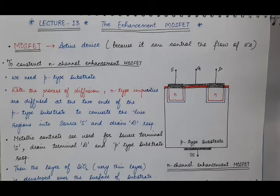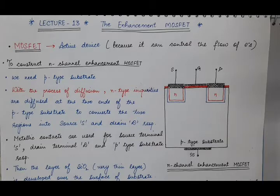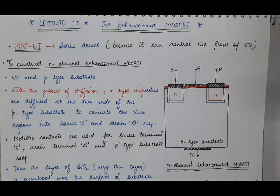It can control the flow of current or the flow of electrons. In today's lecture, we will discuss how to construct enhancement type MOSFET and how the conducting channel is formed between the source and the drain. In the next lecture, we will discuss the working, or the characteristics, of enhancement type MOSFET.